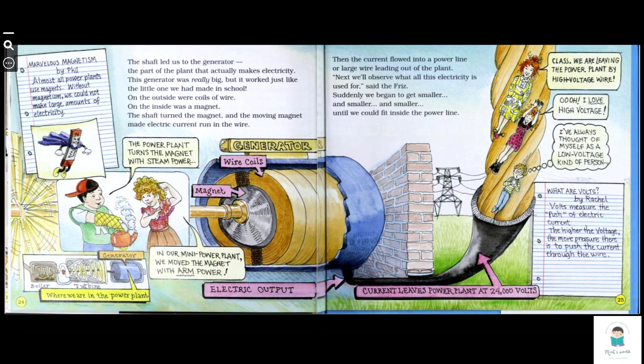Next, we will observe what all this electricity is used for, said the Friz. Suddenly, we began to get smaller and smaller until we could fit inside the power line. Marvelous magnetism: almost all power plants use magnets. Without magnetism, we could not make large amounts of electricity. The power plant turns the magnet with steam power. In a mini power plant, we move the magnet with hand power.